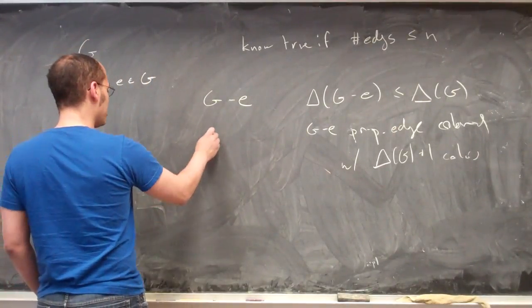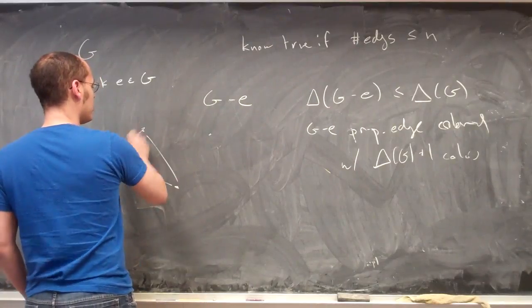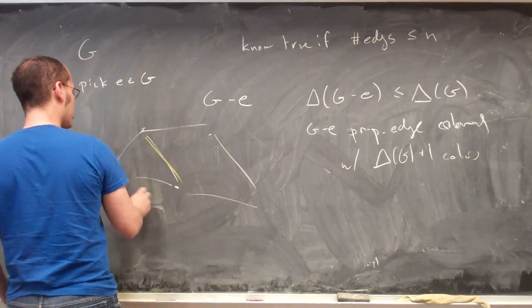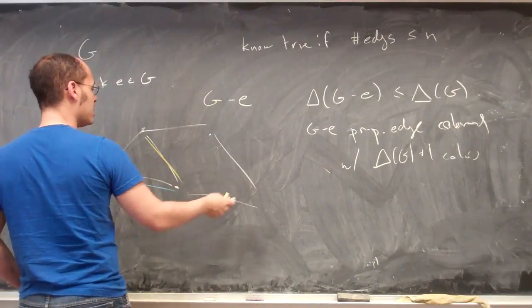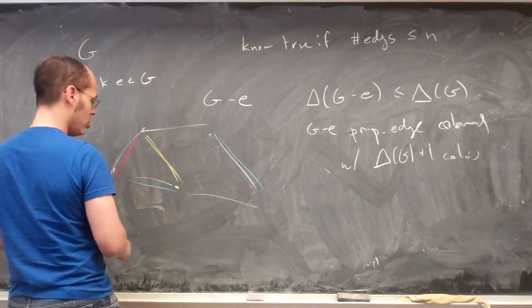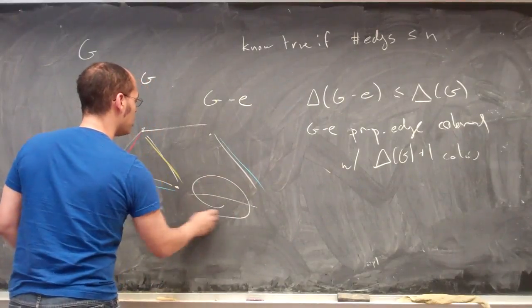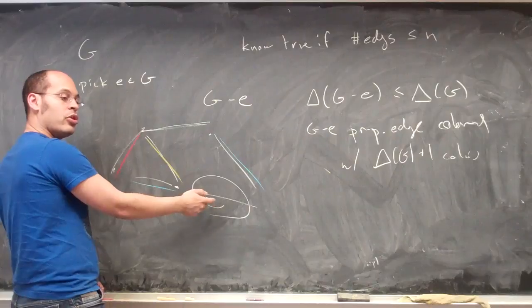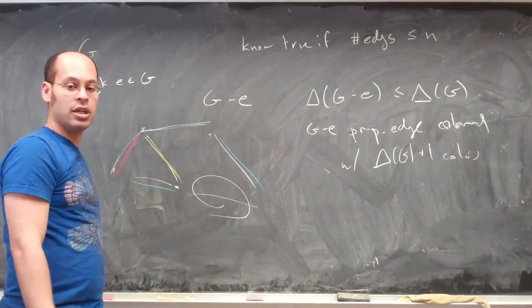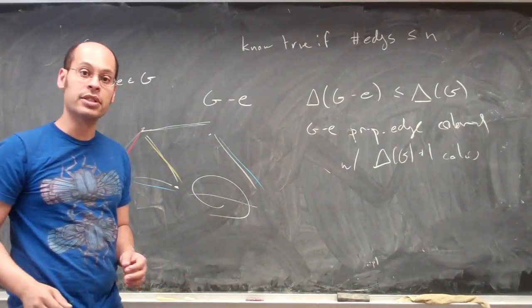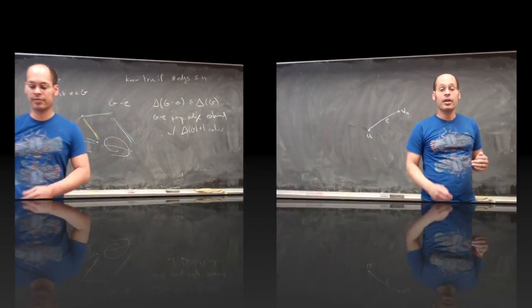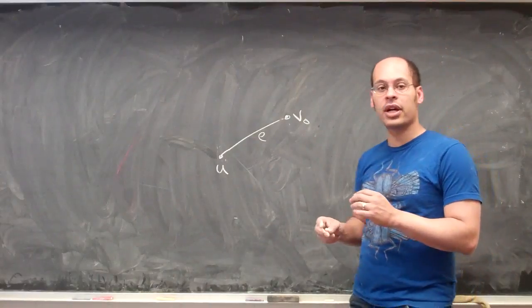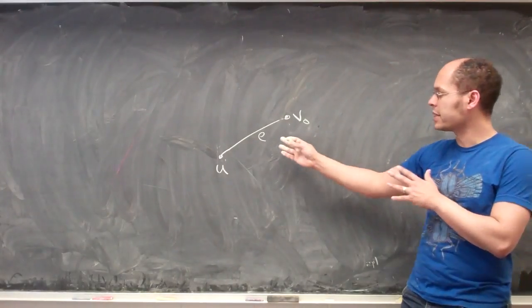So the whole game will be: suppose we are given such a colouring, and just try to figure out how we can colour that one last edge. We have some graph, and we've come up with a nice proper colouring for all the edges except one particular edge e that we're concerned with. The question is how can we assign a remaining colour to this edge? That's going to be the structure of the proof.